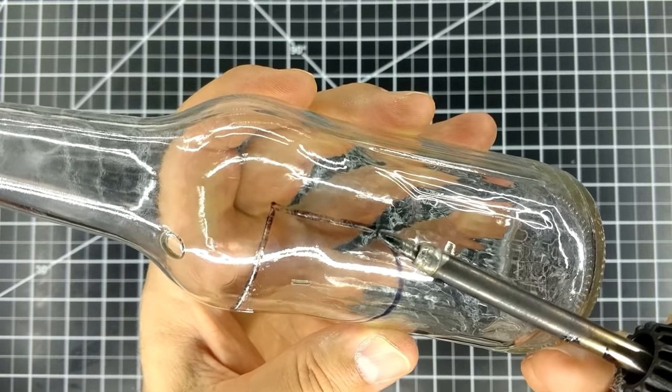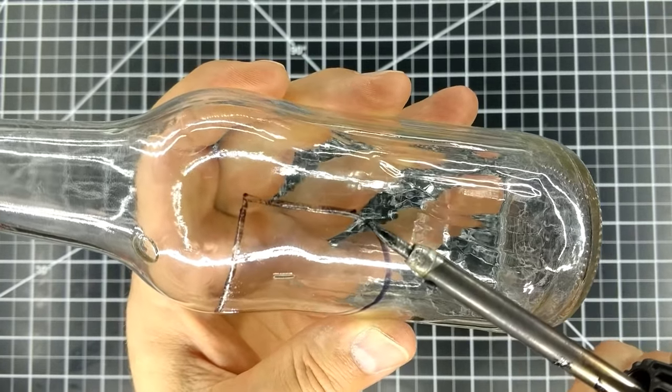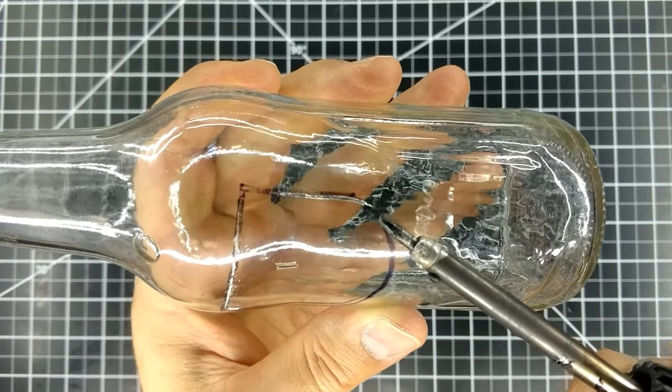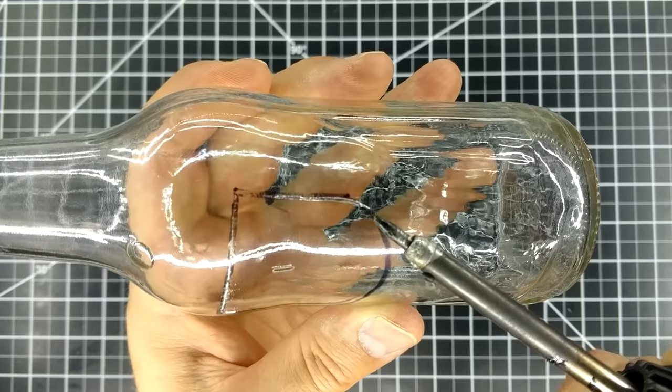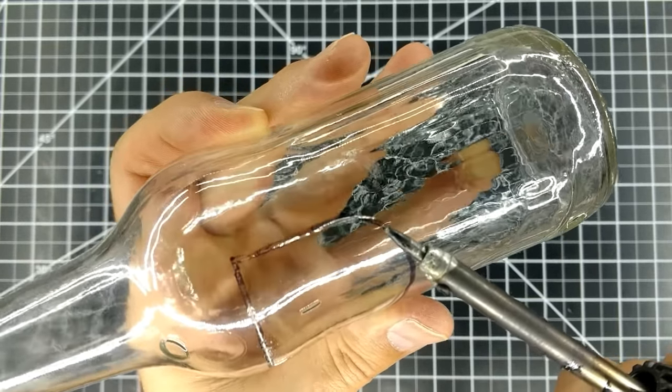But one thing to be careful of when making sharp turns is random cracks forming. Trying to go around a tight angle or tight curve doesn't always go as planned. Because of that, this method isn't a good idea for small holes.